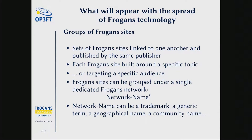We'll have grouped sites, because they can be published by the same publisher — maybe a group of people, a company, an association, or the like. These sites, published by the same entity, will share several things in common. Forgance technology has made provisions for that. With the topology of Forgance addresses, we can group different sites — different in terms of content and look — under the same umbrella called the Forgance Network.